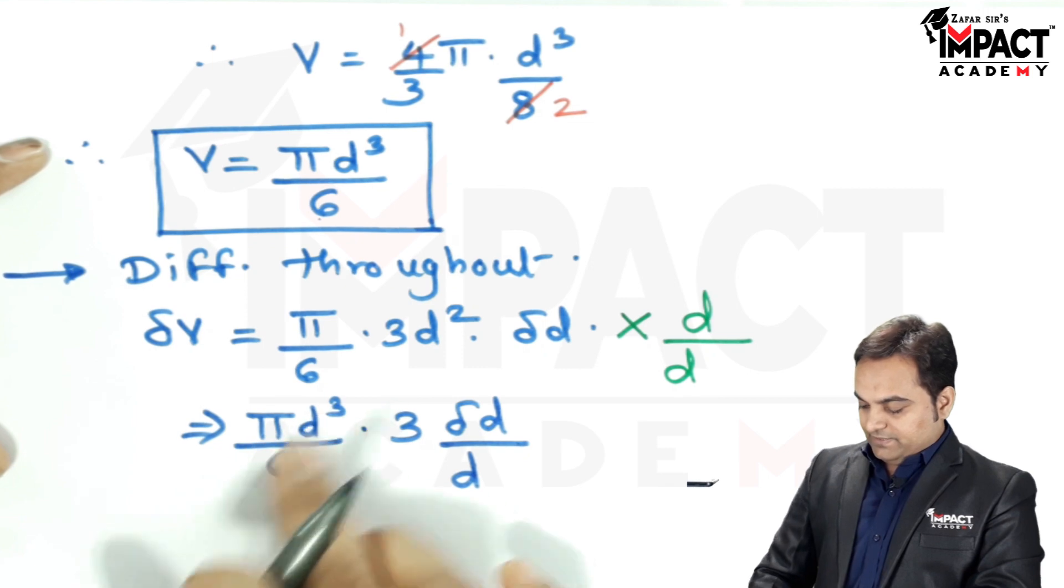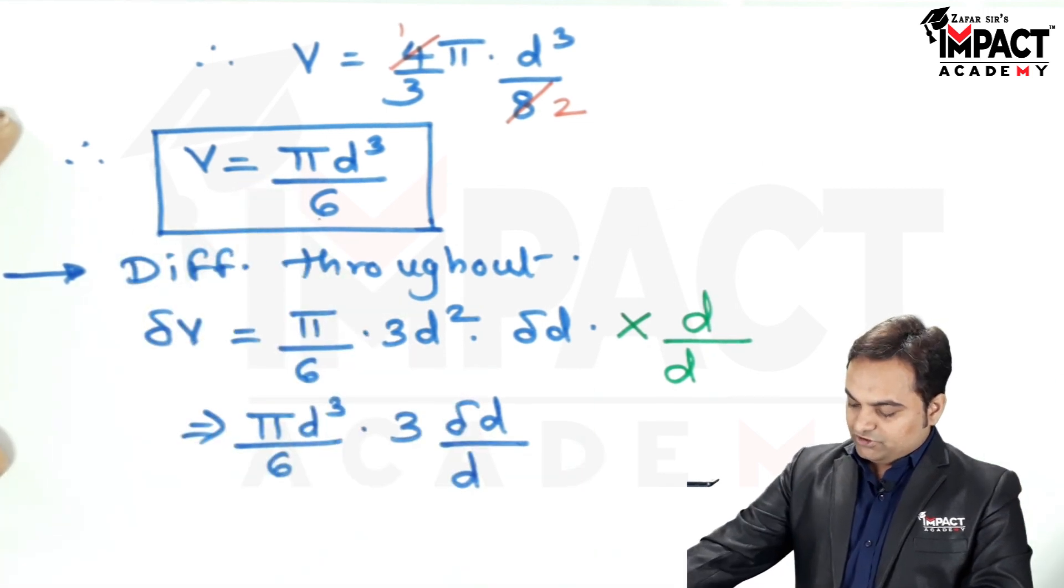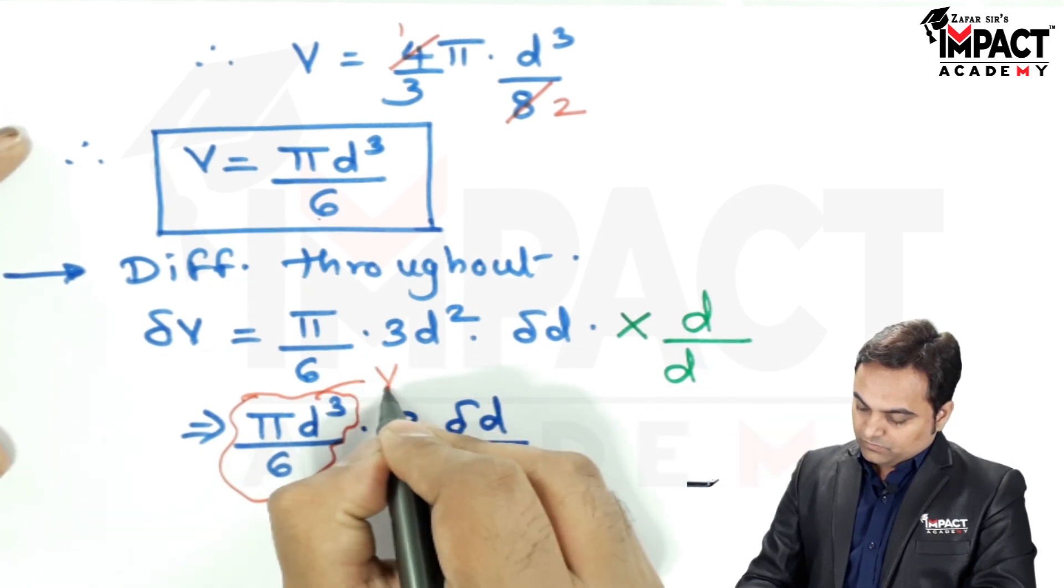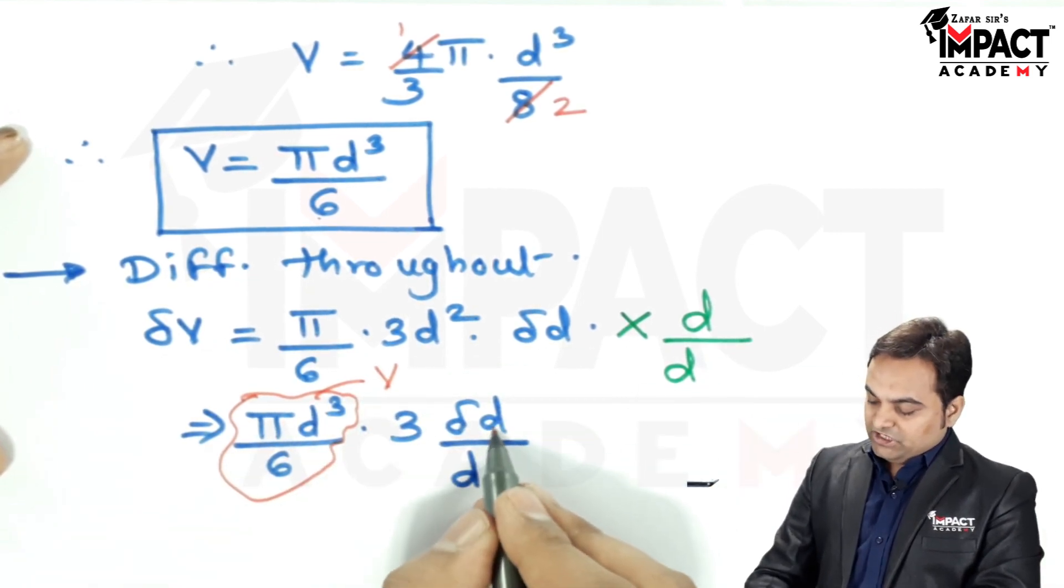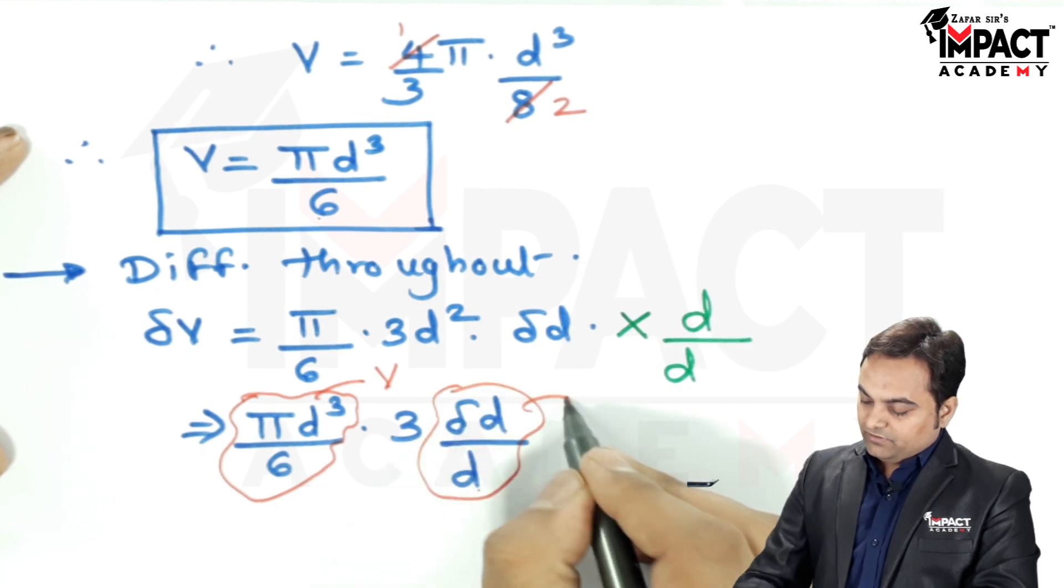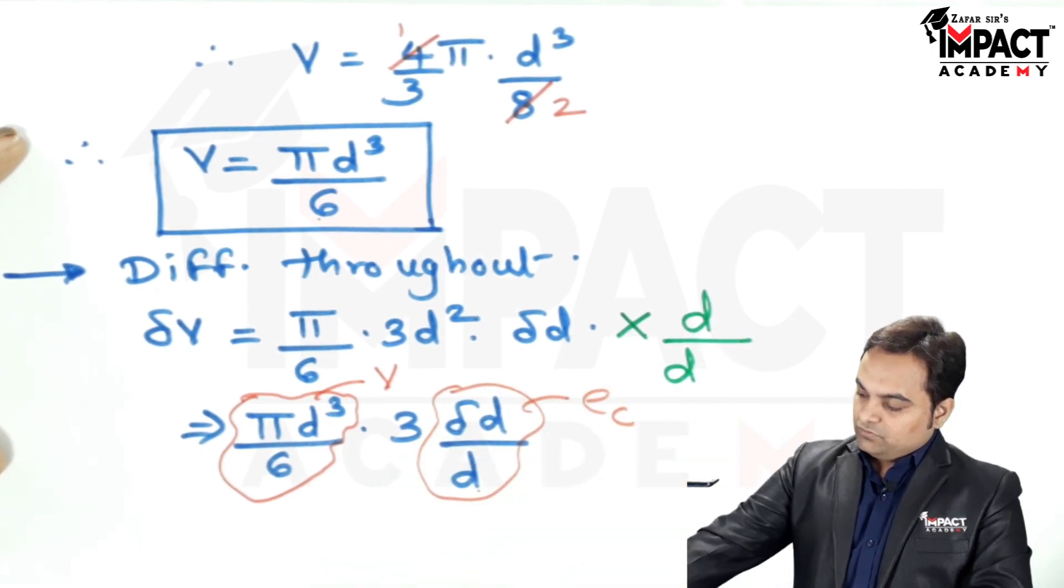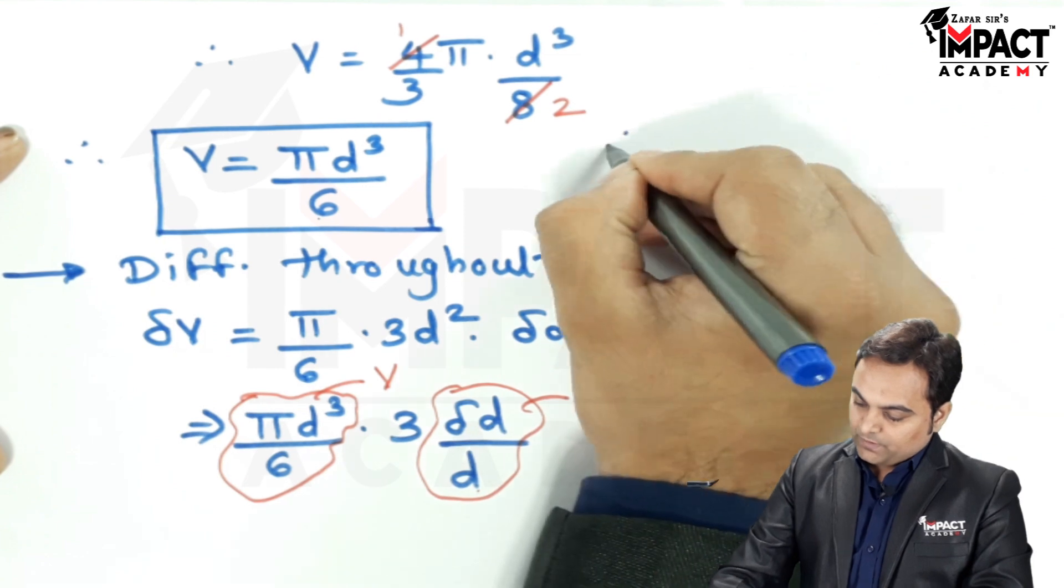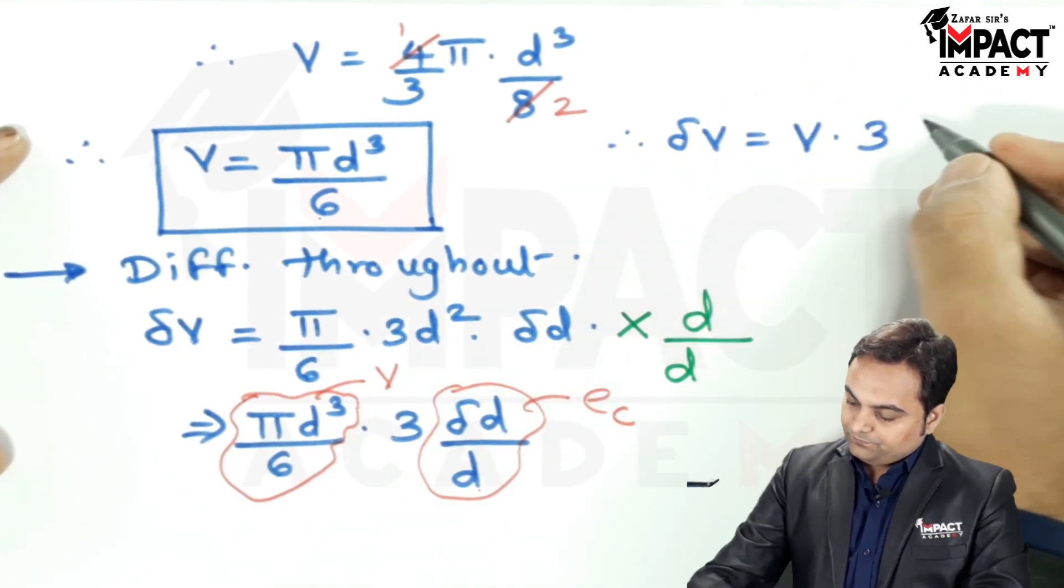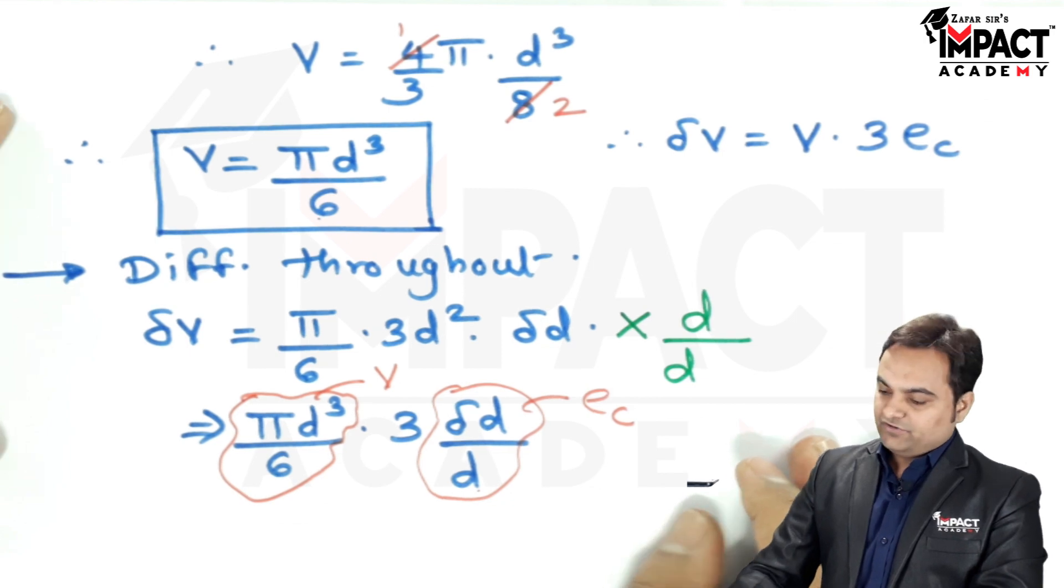Now, Pi D cube by 6 is nothing but the original volume, denoted by V. Change in diameter by original diameter is nothing but the circumferential strain. So, finally, delta V would be equal to V into 3 into circumferential strain.